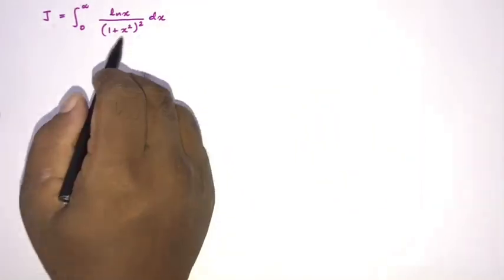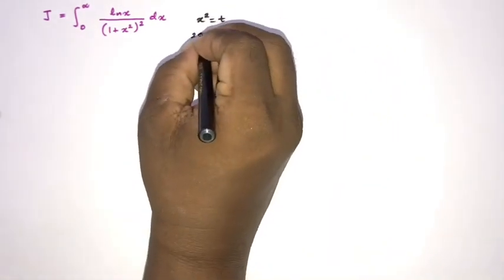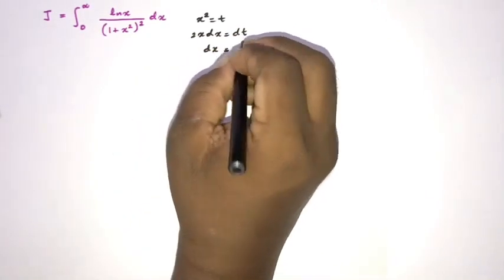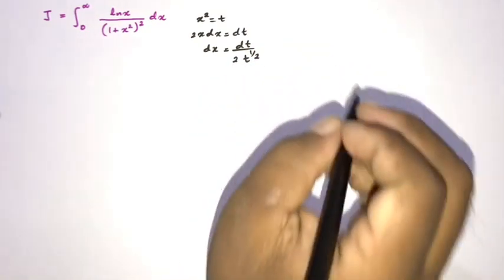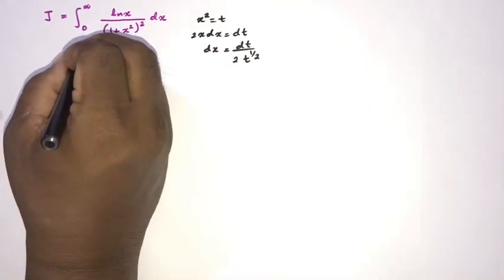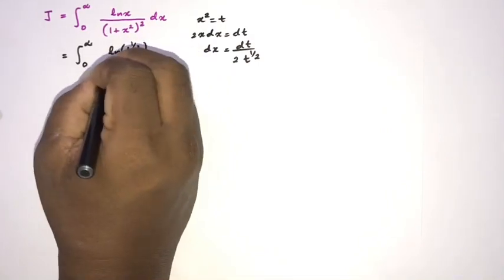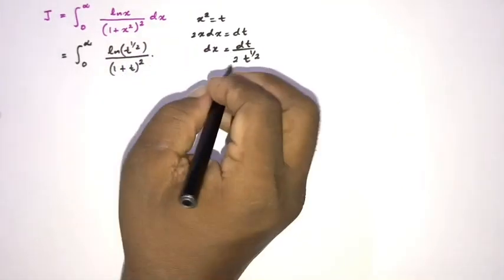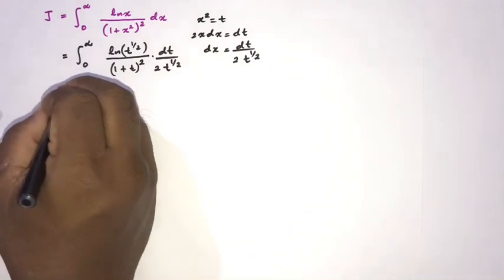First, since we have x squared, I am going to use the substitution x squared equals t. Differentiating: 2x dx equals dt, so dx equals dt over 2 times t to the one half. The limits remain 0 to infinity. Substituting, we get the integral from 0 to infinity of ln(t^(1/2)) over (1 plus t) squared times dt over 2t^(1/2).